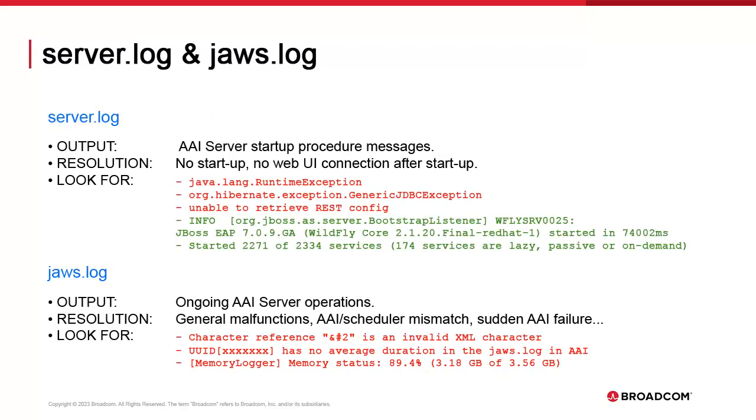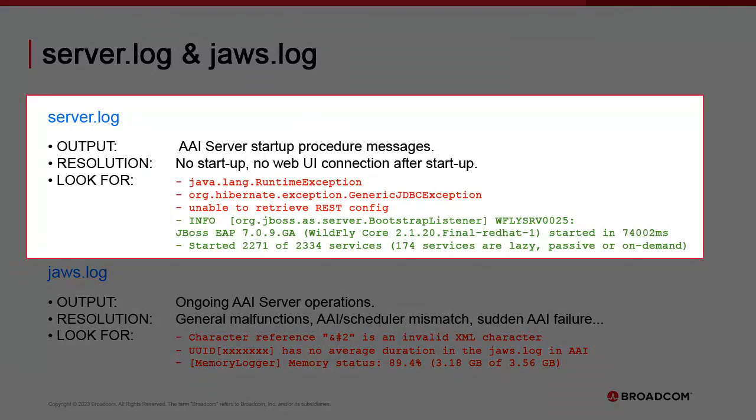The next log is applied system-wide to AAI and will provide the bulk of the information needed to troubleshoot the server. From this point forward, all logs are found in JBoss standalone log. The startup procedure writes to server.log. Use it to identify basic configuration issues, problematic Java functions, or a missing database connection preventing AAI from starting. A series of info messages show that AAI initialized properly. Depending on the version of the JDK, you may see warnings, which won't prevent startup, but you may want to look into them. When the procedure ends with the message 'services are lazy, passive, or on-demand,' AAI is up and running.